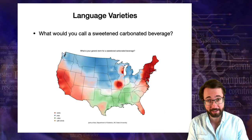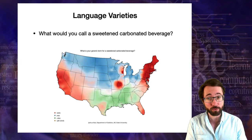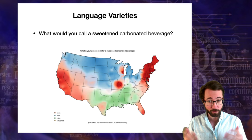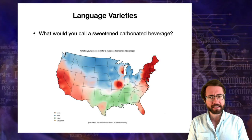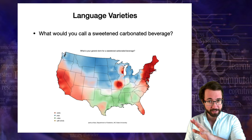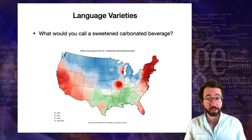It turns out that what you call this thing varies from region to region in the United States — there's variation based on geographical region. In the blue regions, people call it pop. In the red regions, soda. In the green regions, they call it Coke, even if it's not a Coca-Cola product. I personally grew up calling it soft drink, which apparently isn't big enough to merit a portion on this map. The point is that English is not one monolithic thing; there's variance based on geographical regions in terms of lexical semantics.